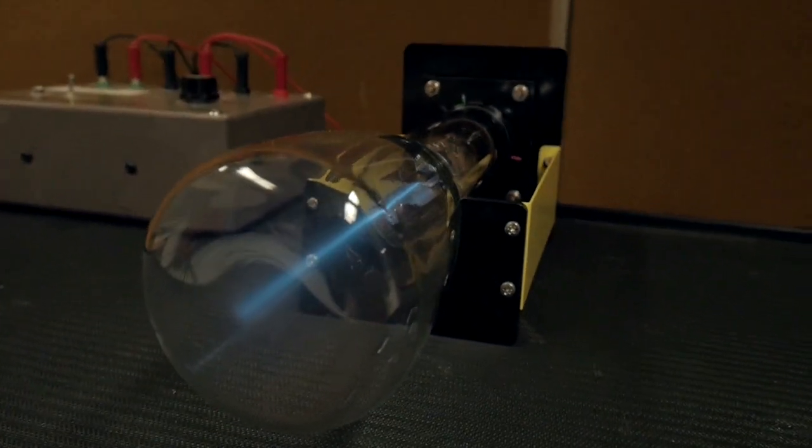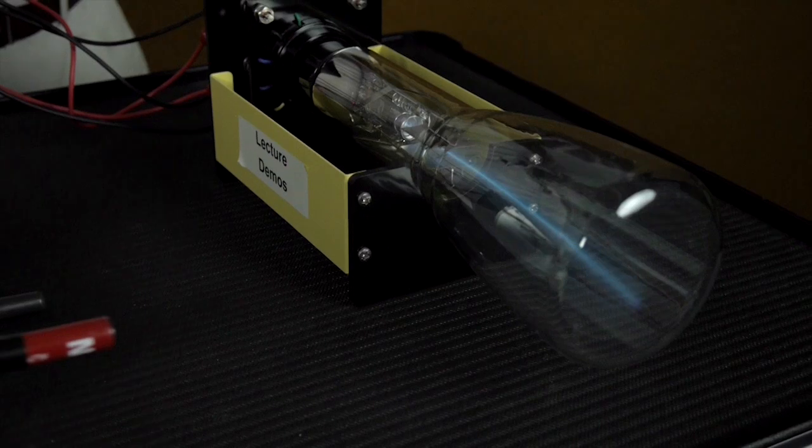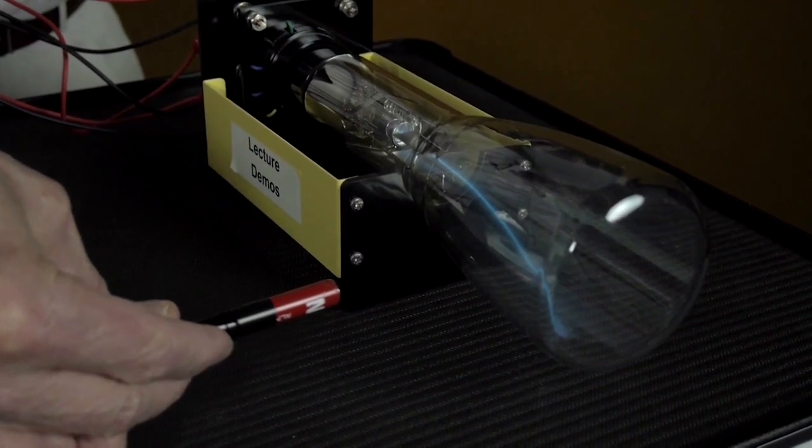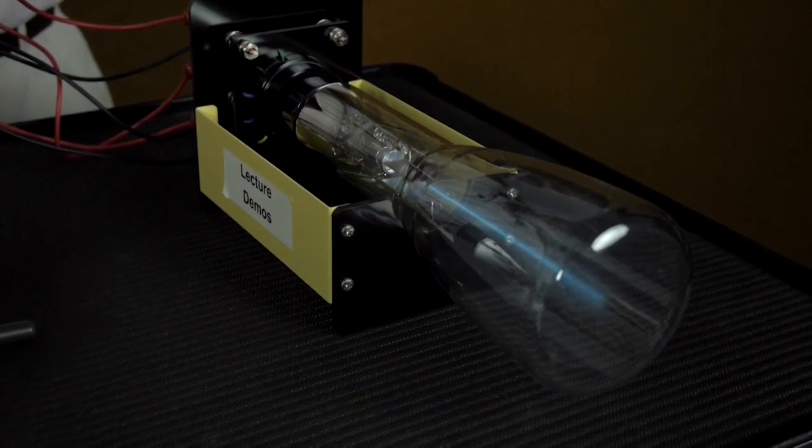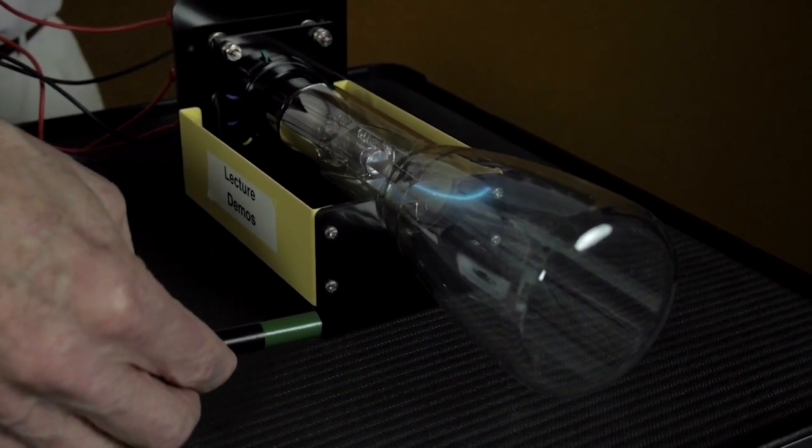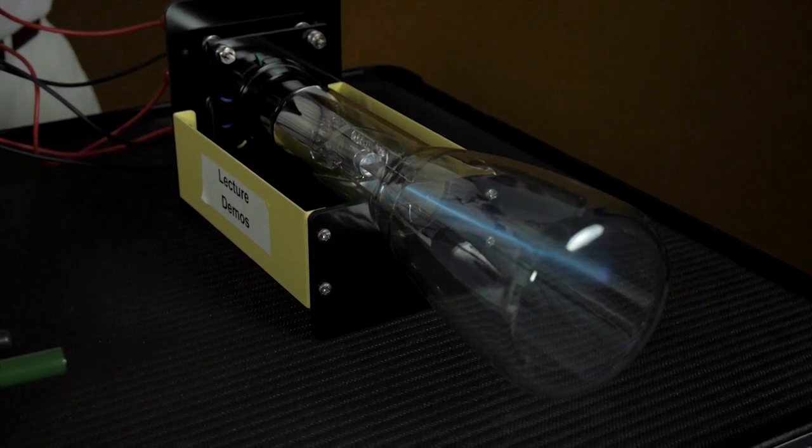Watch what happens when I bring a magnet near the beam. The beam deflects, which shows that there is a transverse force due to the magnet on the moving electrons. In general, any charged particle that is moving in a magnetic field will experience this fundamental magnetic force.